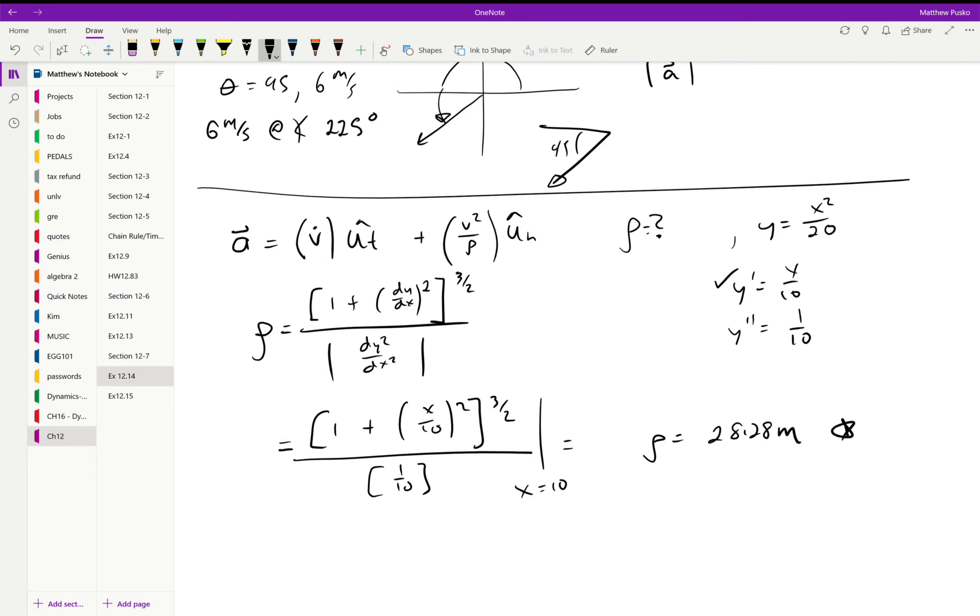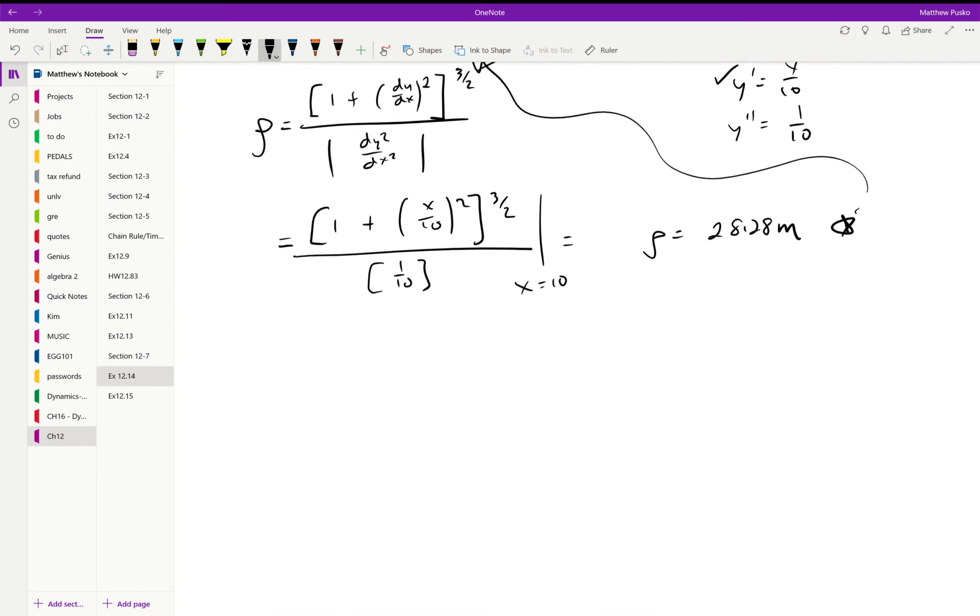We need to put that back up into the formula. We're given that it is building speed at 2 meters per second, so that's an acceleration in the tangential direction. We also can find the normal component as v squared over rho. We know that at that moment it's going 6 meters per second, and we just found rho as 28.28 meters. The normal component is 1.273 meters per second squared. So using this, we can put together our vector. The acceleration is 2 in the unit tangent direction plus 1.273 in the unit normal direction.